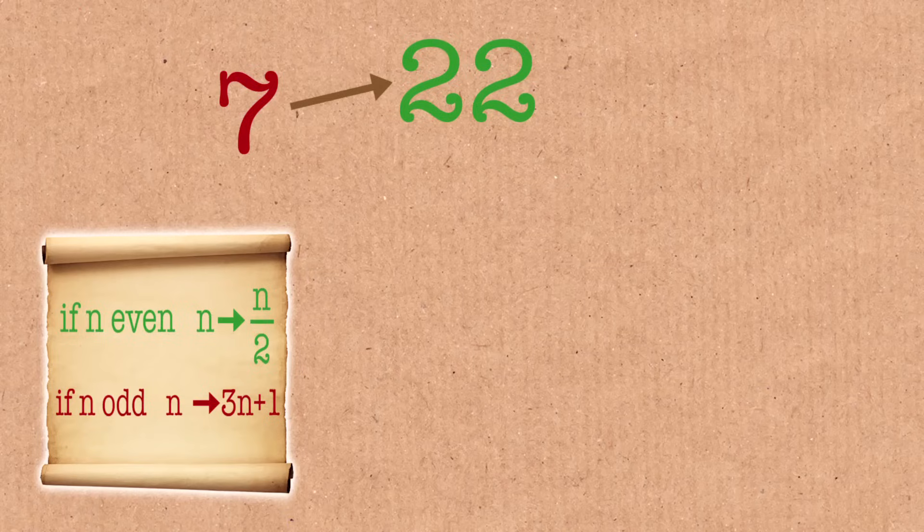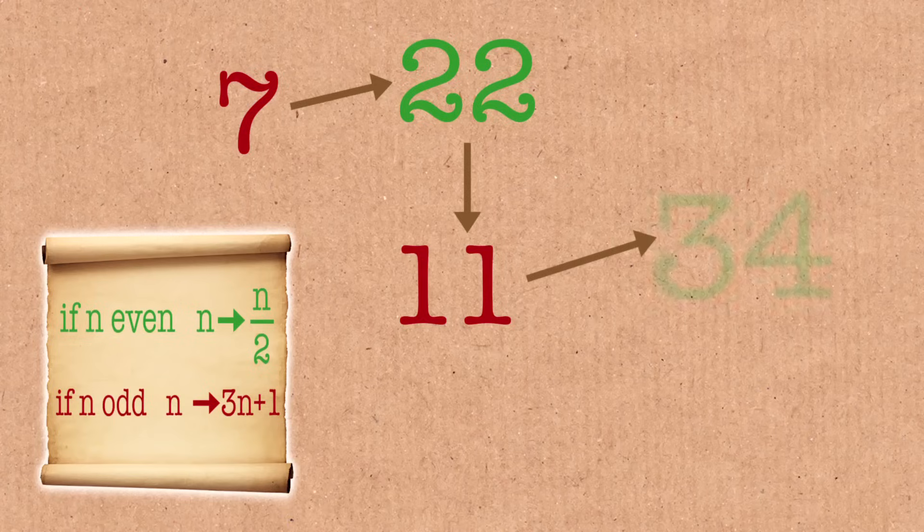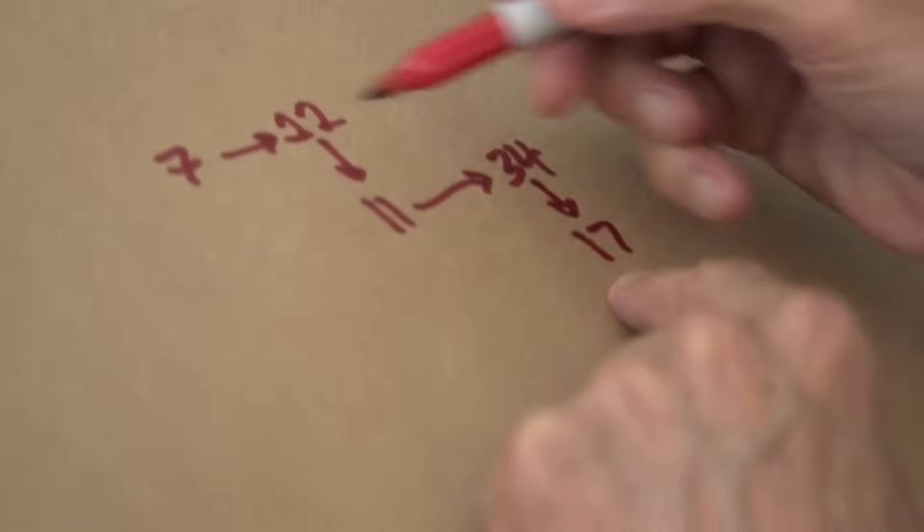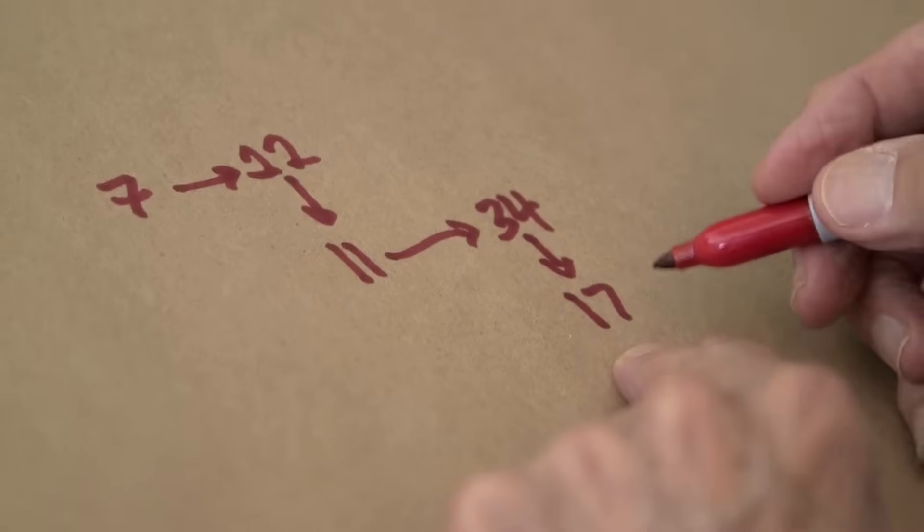22 is certainly even, so I'll divide by 2 and get 11. 11 is odd, so I multiply by 3, getting 33, and add 1, get 34. 34 is even, I divide by 2 and I get 17. So far it's sort of going up and down, but 34 was the biggest yet, so maybe it's headed off to infinity after all.